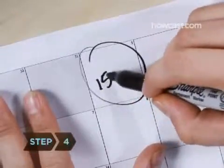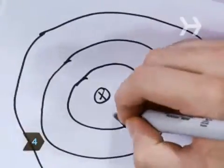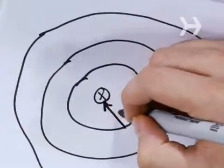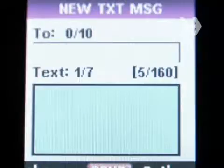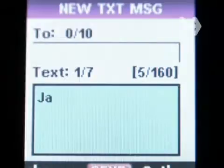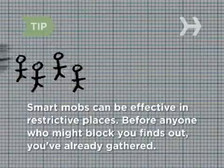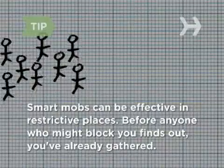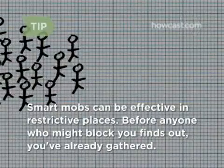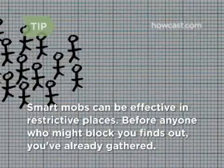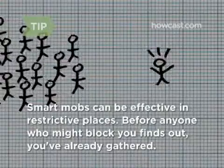Step 4: Set the date and time for the Smart Mob, and roughly calculate how long it will take for participants to reach the location. You may want to alert people to the date ahead of time, but keep all other information secret. Smart mobs can be especially effective in places that discourage free assembly — by the time anyone who would want to stop you finds out, your group has already gathered.